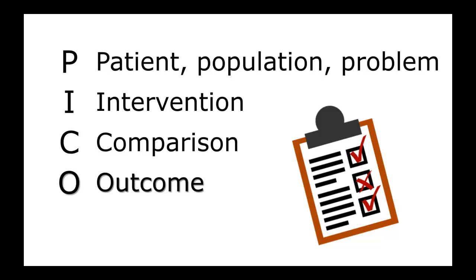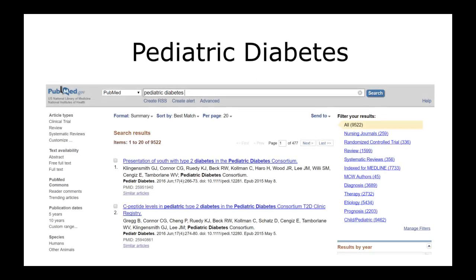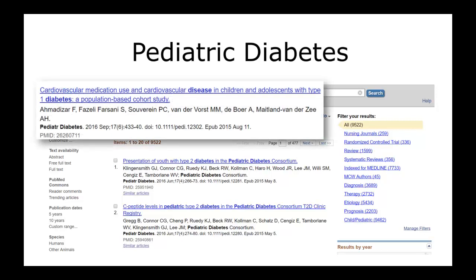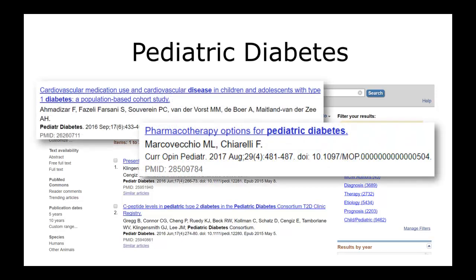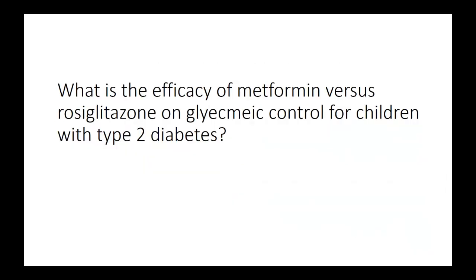Let's take a look at the general topic of pediatric diabetes. Searching PubMed for these terms brings up thousands of results on a variety of topics, ranging from rates of comorbidities to drug therapies and social determinants of health for children with diabetes. Our goal is to create a focused question that only looks at one of these topics. Consider this question: what is the efficacy of metformin versus rosiglitazone on glycemic control for children with type 2 diabetes?